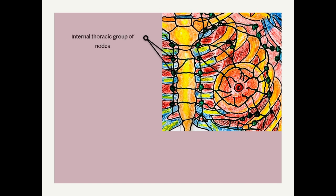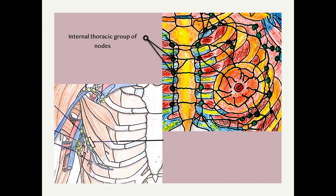These are the internal thoracic group of lymph nodes. These are the anterior axillary lymph nodes which lie deep to the pectoralis major along the lower border of pectoralis minor.